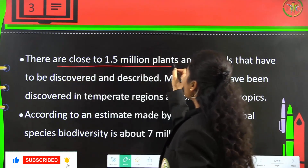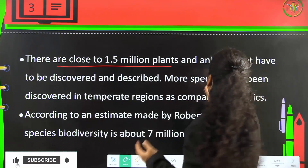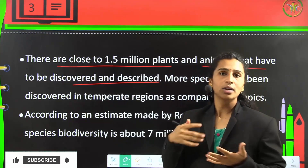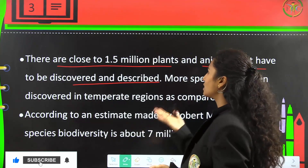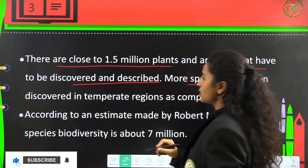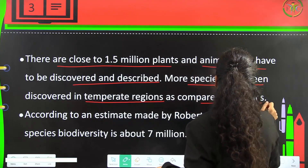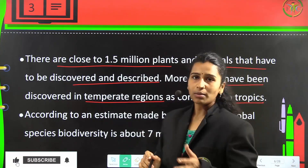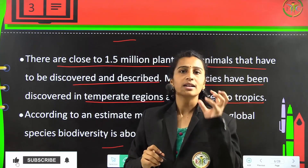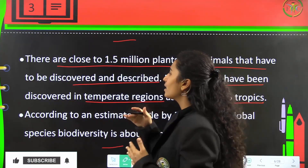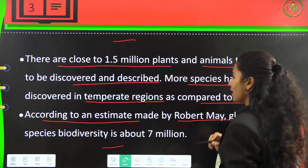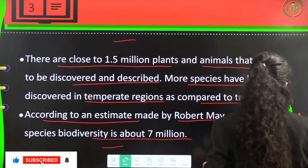There are close to 1.5 million plants and animals which have been discovered and described. More species have been discovered in the temperate regions as compared to the tropics. According to an estimate made by Robert May, global species diversity is about 7 million.